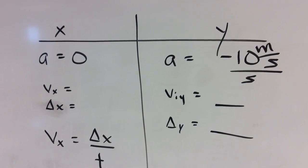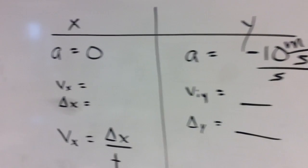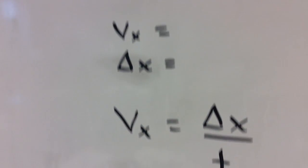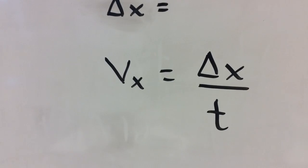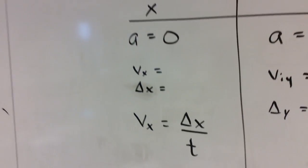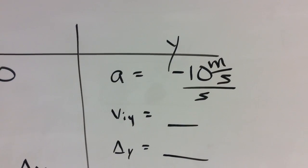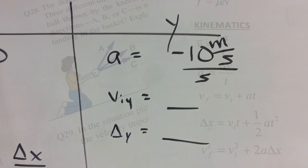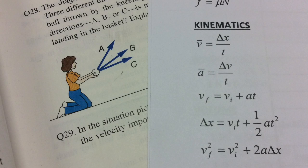It is because of that independence that we can split any projectile problem into two columns. The X column, where the acceleration is zero, the X component of velocity is constant, and one equation applies. It's pretty simple on the left-hand side. But the right-hand side, the acceleration is a negative 10 meters per second every second. You write down the values. Use all the equations, all the kinematics equations, on that right side.